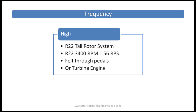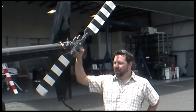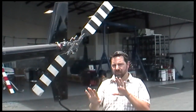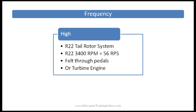High frequency vibrations. In the R-22, high frequency vibrations would be associated with the tail rotor system and would be felt through the pedals perhaps. The R-22's tail rotor is rotating at about 3,400 RPM, which is about 56 revolutions per second. If you're in a turbine aircraft or being asked on an FAA written test, high frequency would refer to the engine, because turbine engines run so much faster.